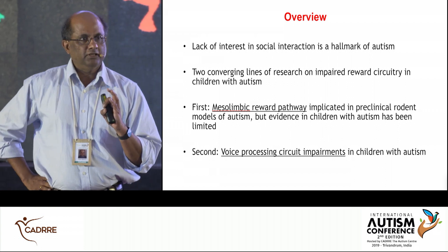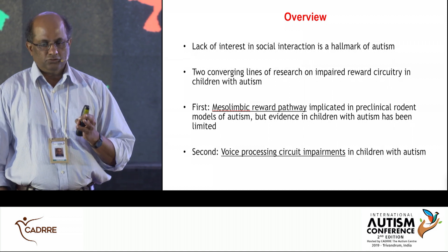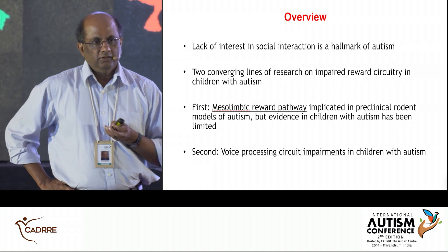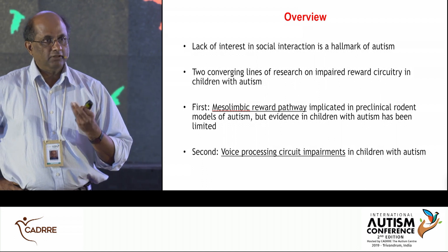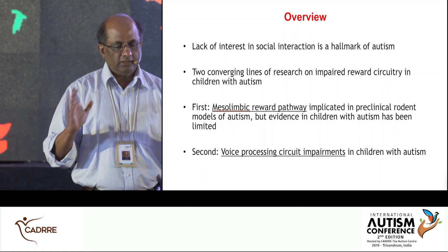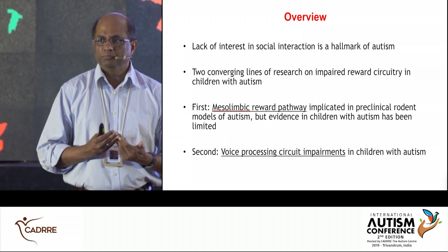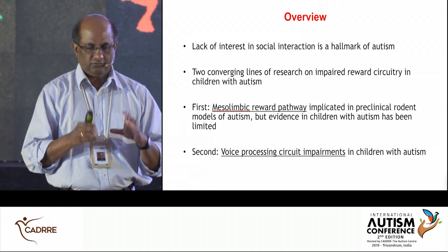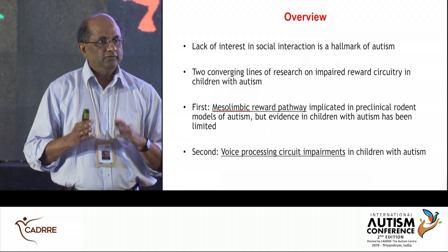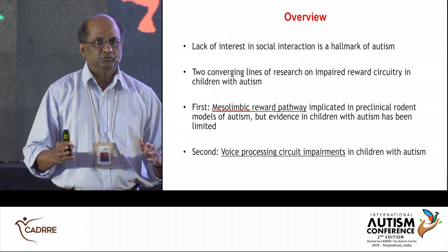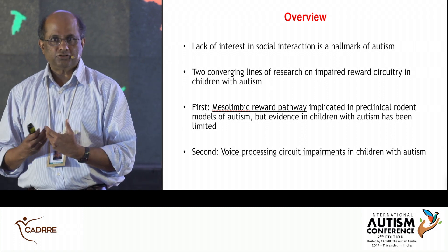I'm going to focus this talk on a particular feature: a lack of interest in social interaction, which is a hallmark of autism — the inability to initiate communication or to respond to social cues, in particular vocal cues. The two lines of evidence I'll summarize are focused on the reward pathway in the brain, building from preclinical rodent studies to ask whether those features are expressed similarly in the human brain.